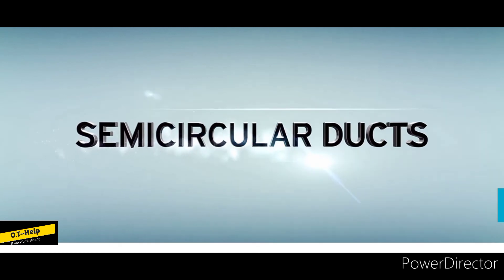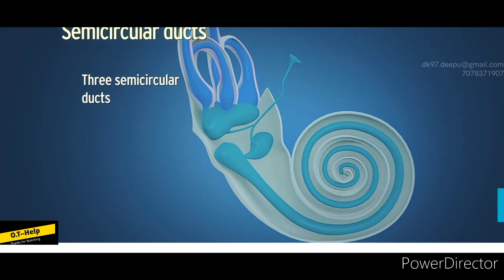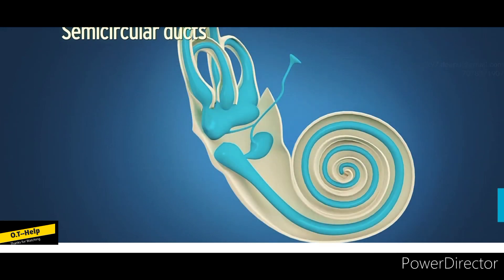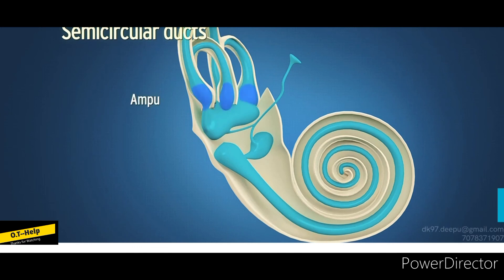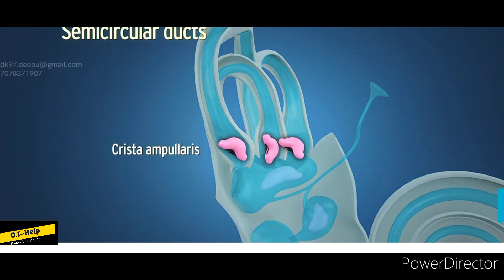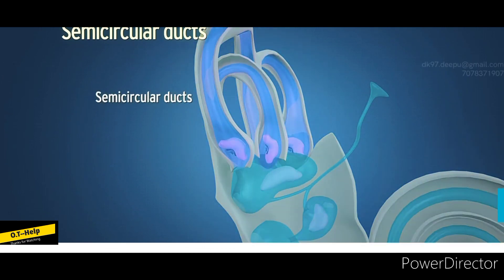There are three semicircular ducts in the membranous labyrinth corresponding to the semicircular canals of the bony labyrinth: anterior, posterior, and lateral. Each duct has a dilated end called the ampulla, corresponding to the ampulla of the semicircular canal. The crista ampullaris is a raised crest projecting into the lumen near the ampullary end of each duct. The semicircular ducts, saccule, and utricle form part of the vestibular system.